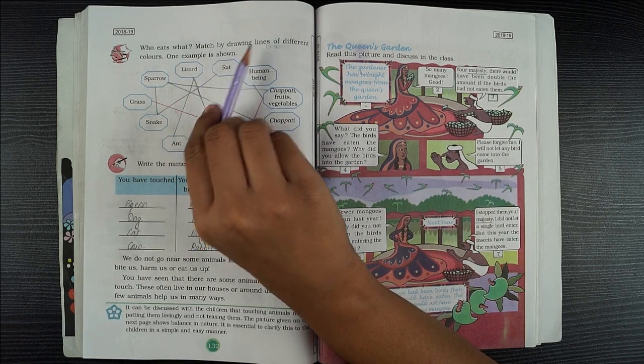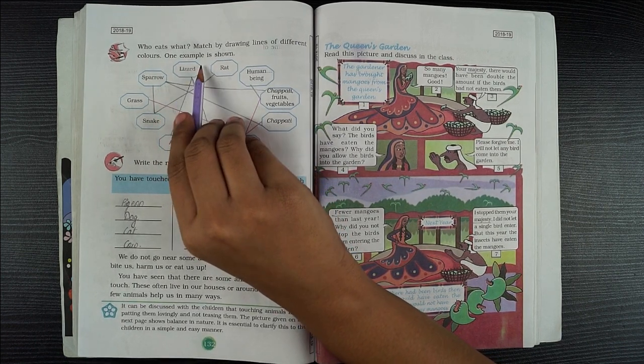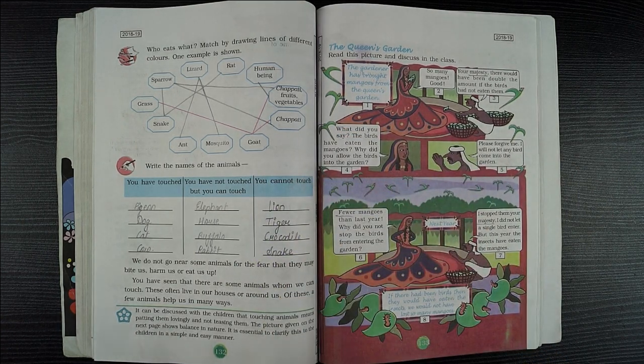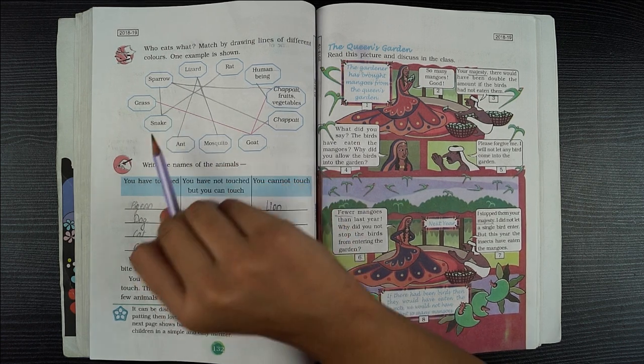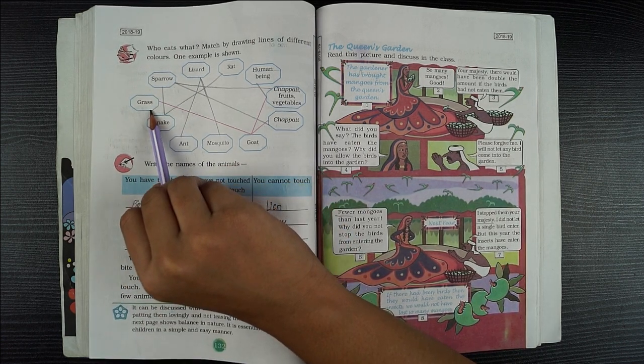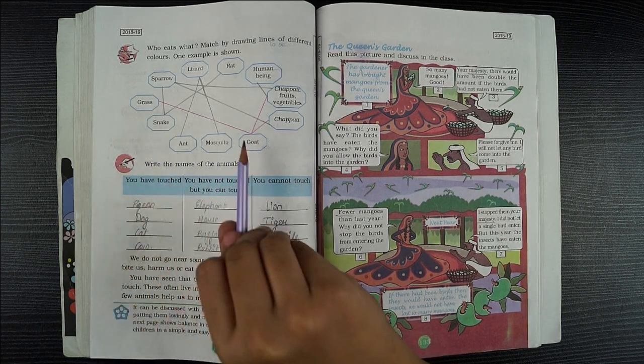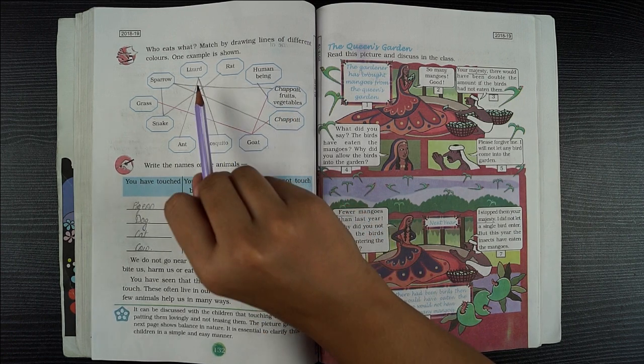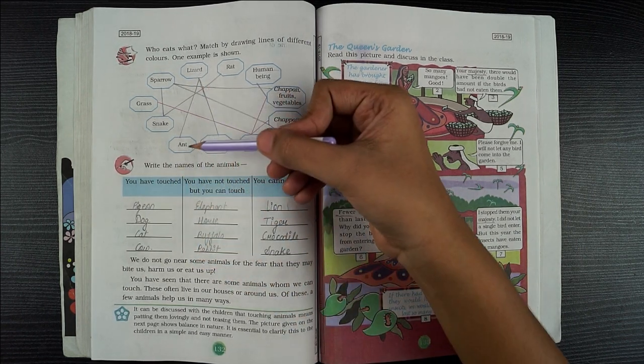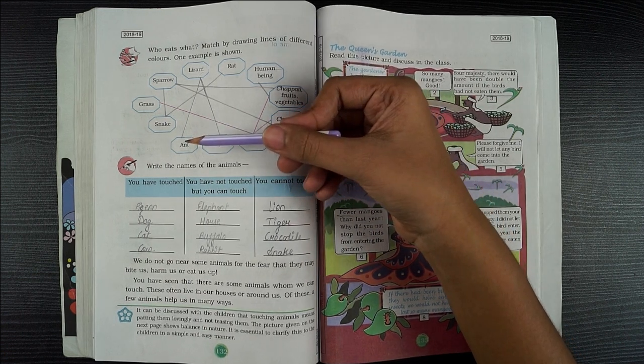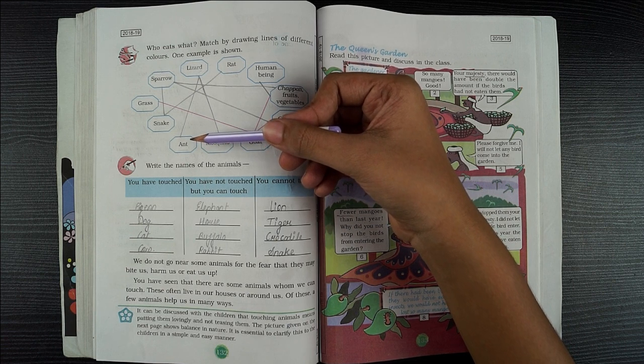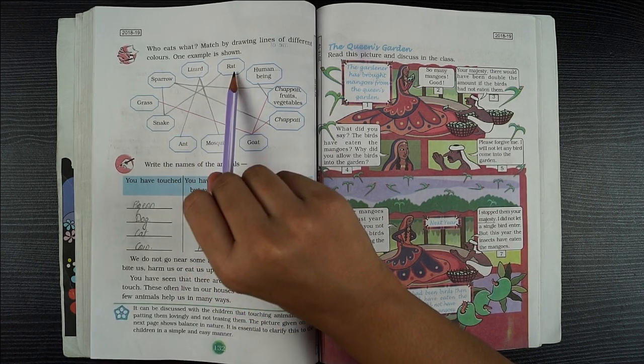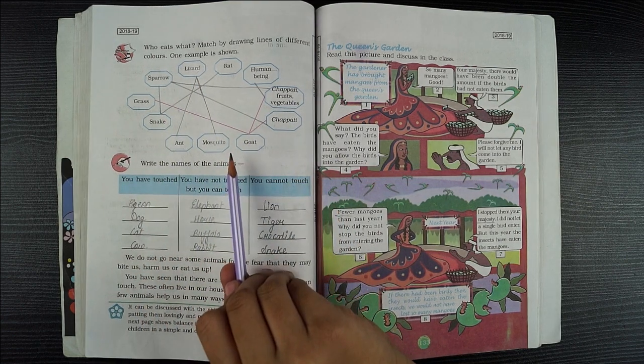Who eats what? Match by drawing lines of different colors. One example is shown. Goat eats grass. Snake eats sparrow and rat. I have completed it here.